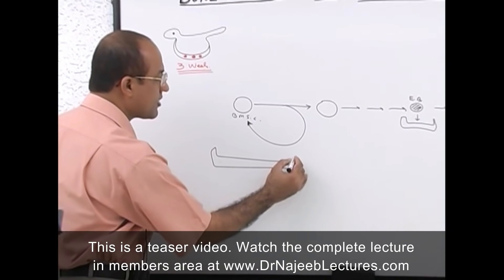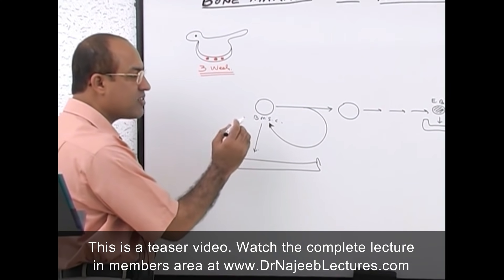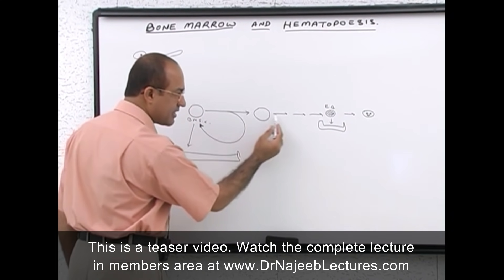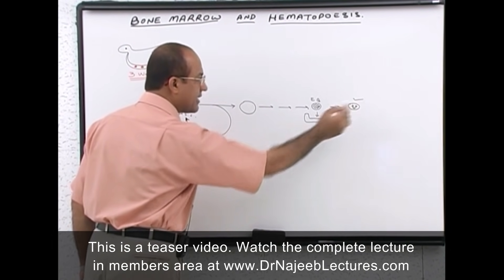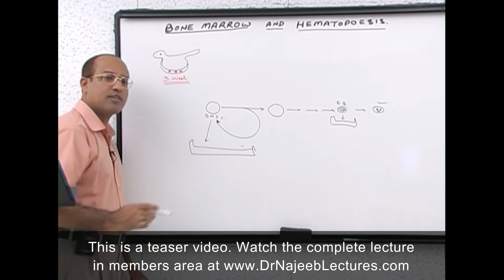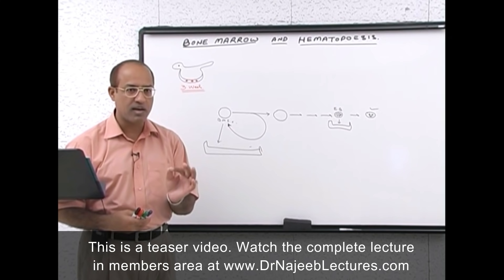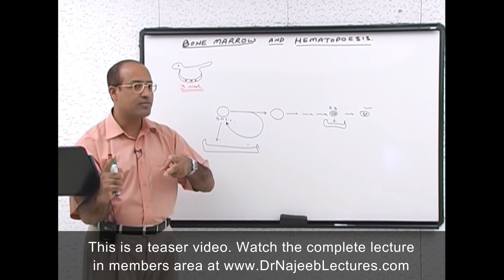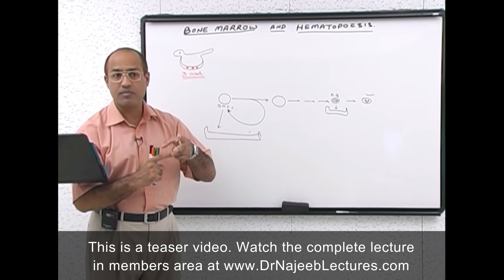In another cell culture dish, if you put a stem cell and properly stimulate it with colony stimulating factors, the stem cell will not only provide the mature product at the end, but will always maintain its own population. So, a stem cell is any cell capable of asymmetrically dividing: one group goes toward well-differentiated products, the other maintains the original stem cell population.